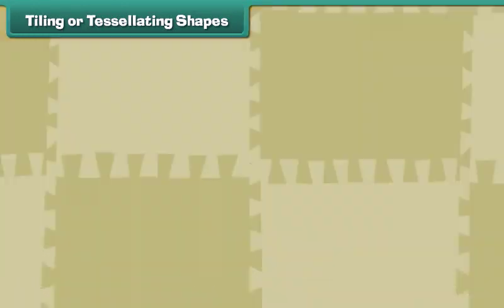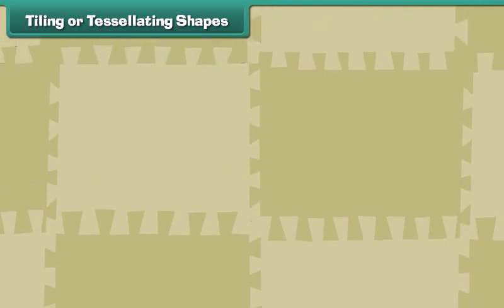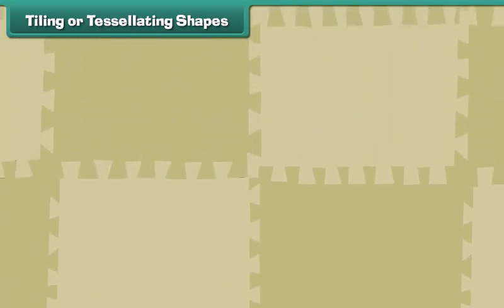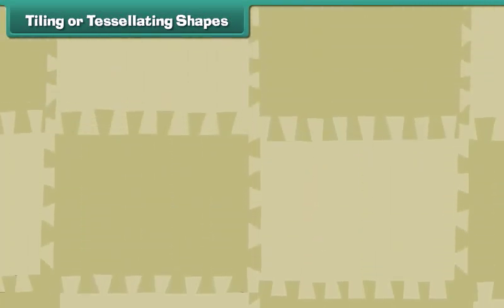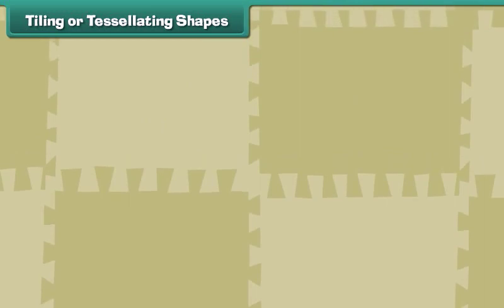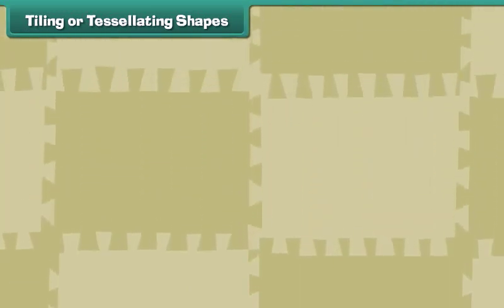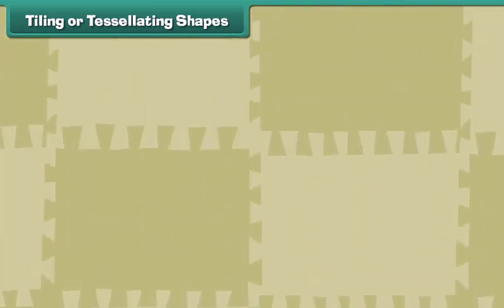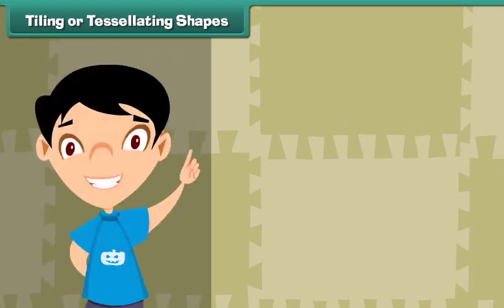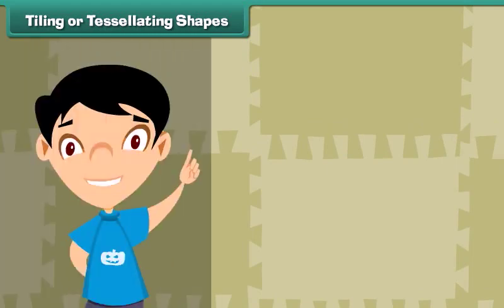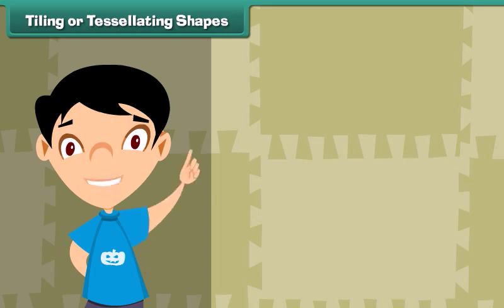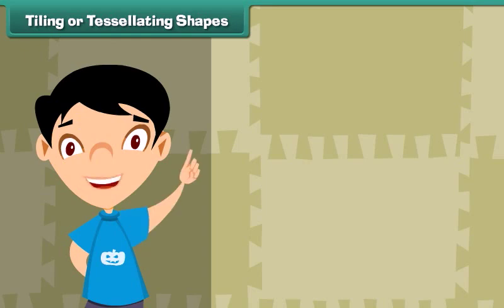Rajani is on her way to the pharmacy. She notices tiles of irregular shapes on the pavement and observes that the tiles have been fitted together without any gaps between them; moreover, the tiles do not overlap. The tiles form a tessellation. A tessellation is a two-dimensional figure created through the repeated use of a geometric shape in such a way that there are no gaps or overlaps.